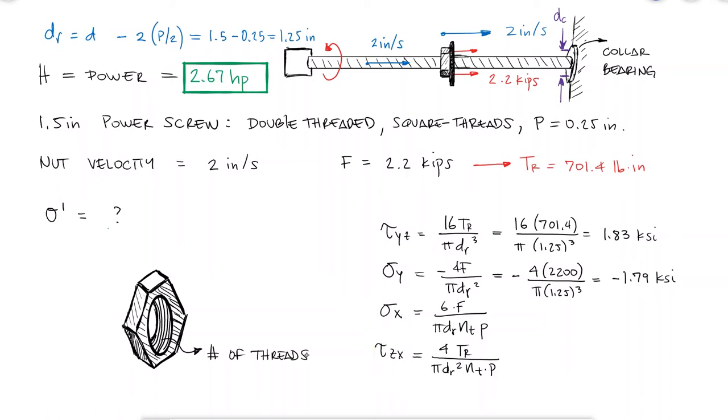However, let's assume that this is a very thin nut and that it only has three full threads, meaning three threads will be engaged between the nut and the screw.